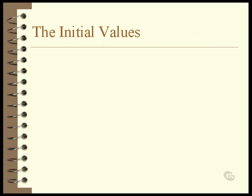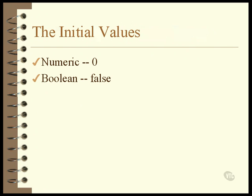Whenever you declare a data item — whether inside or outside of a method — and you don't specify an initial value for it, Java initializes it for you. All numeric data types are initialized to 0, which is true for both integers and real numbers. Boolean data types are initialized to false. Unless you specify the address of an object to be stored in them, all references are initially set to null.